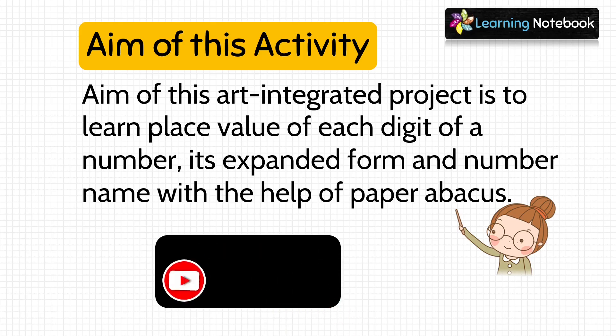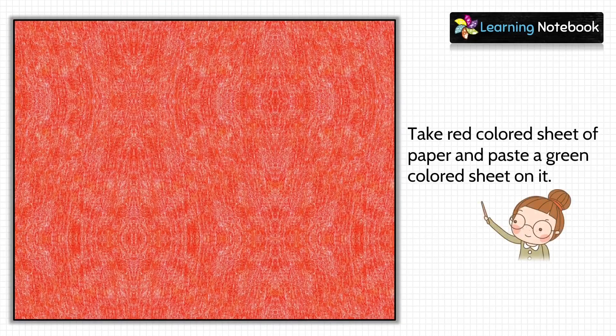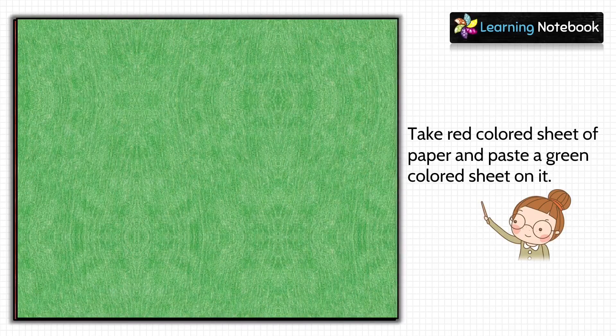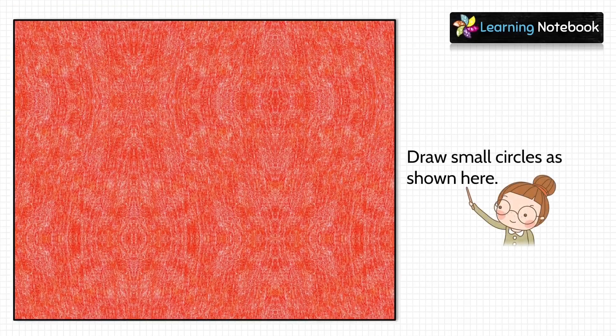In the first step, take a red colored sheet and paste a green colored sheet on it as shown. Now on the sheet, draw small circles with the help of coins.